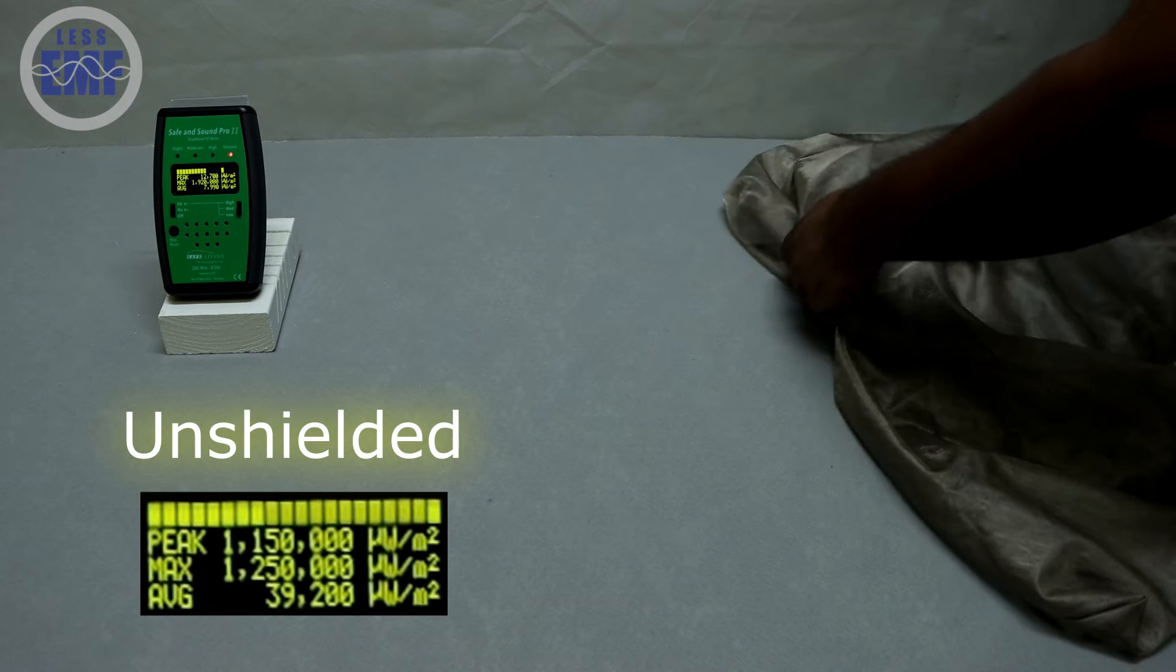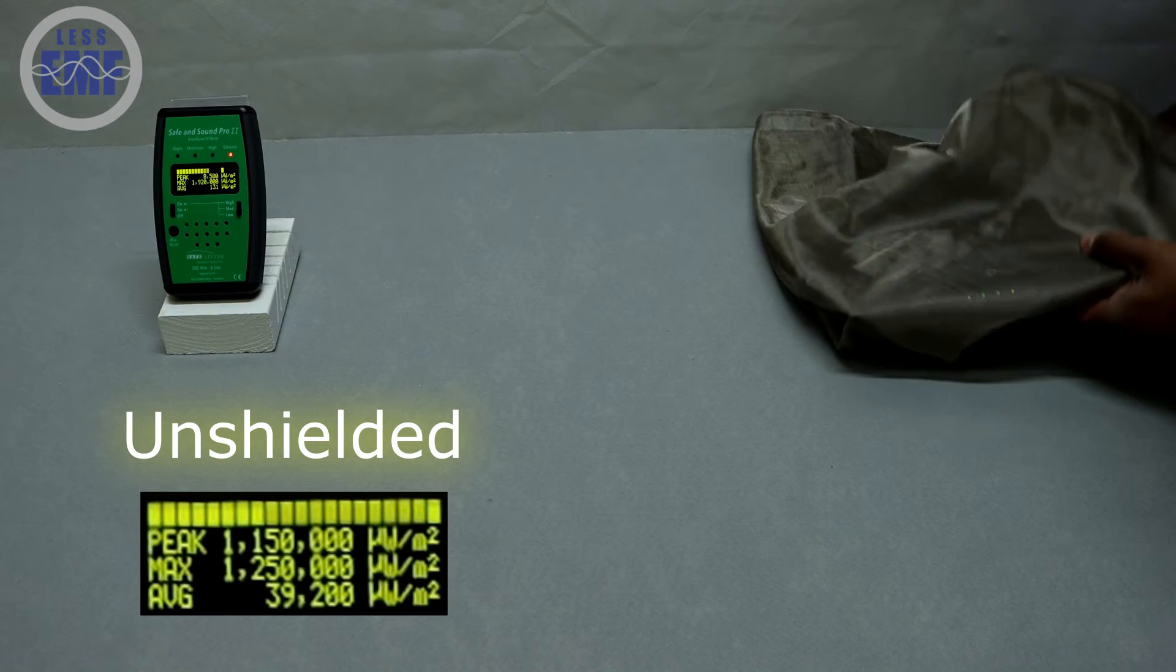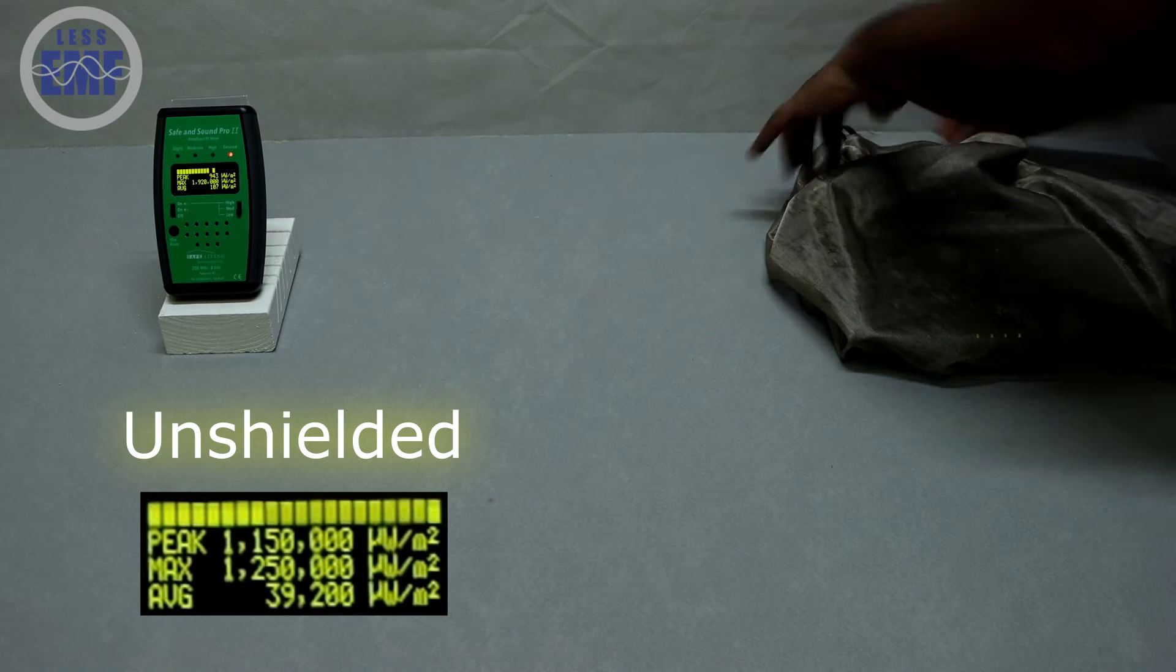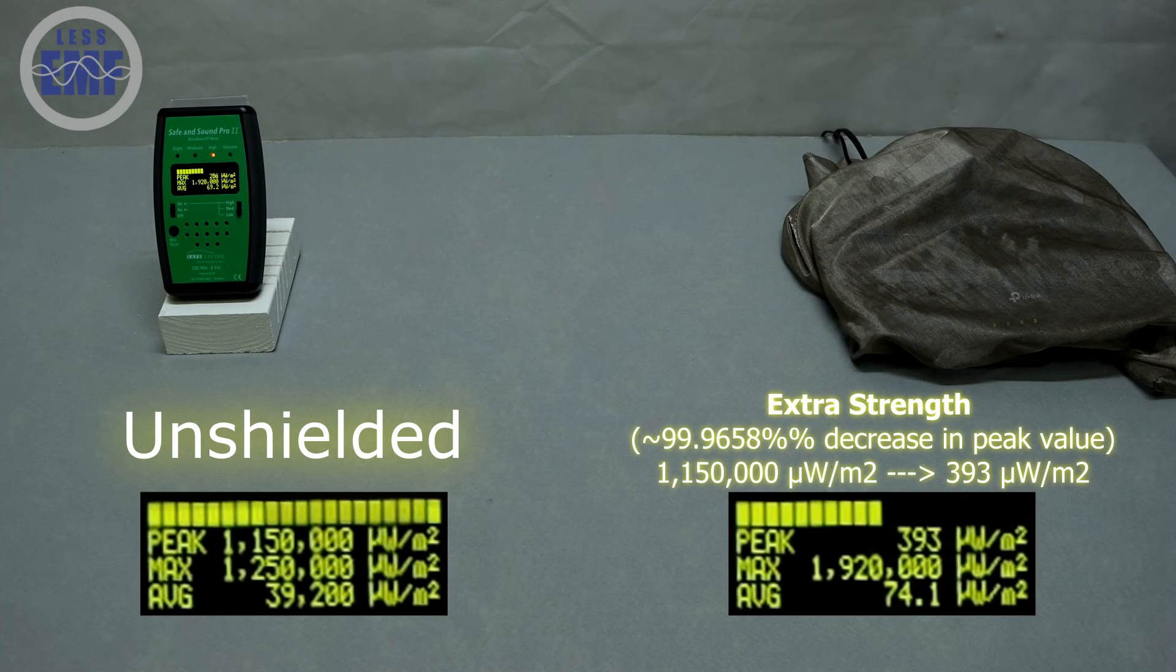Let's check the results with the extra strength signal tamer. You can see an even greater reduction in radiation compared to the regular strength version. The extra strength cover delivers enhanced shielding for those concerned about wireless exposure.